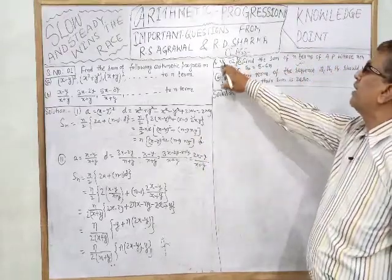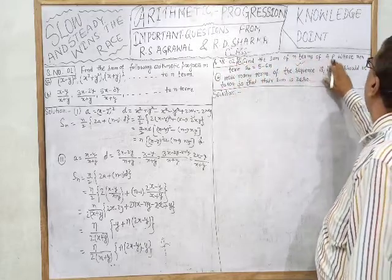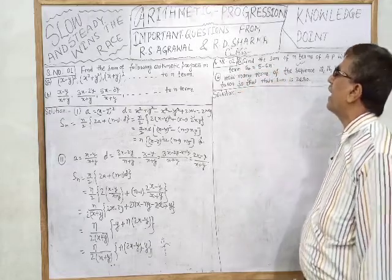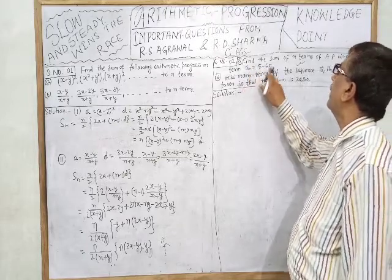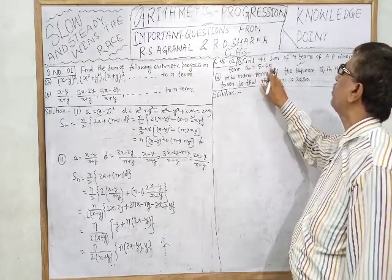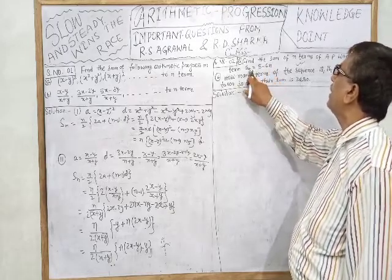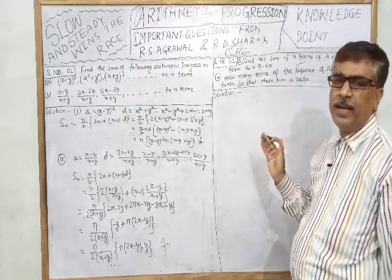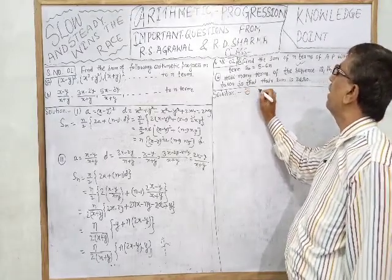Question number 2: find the sum of n terms of an AP whose nth term aₙ = 5 - 6n. First, find a₁ by substituting n=1: a₁ = 5 - 6×1 = -1. Then a₂ = 5 - 6×2 = 5 - 12 = -7. And a₃ = 5 - 6×3 = 5 - 18 = -13.